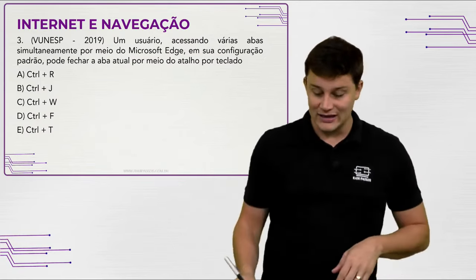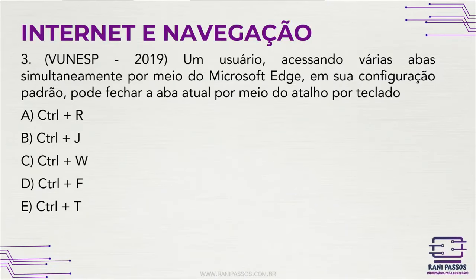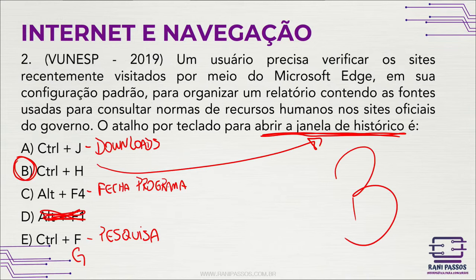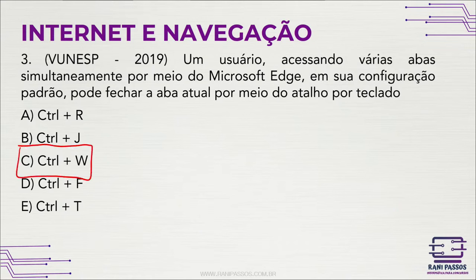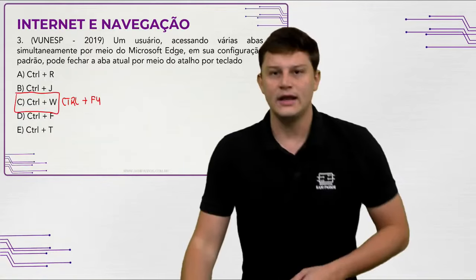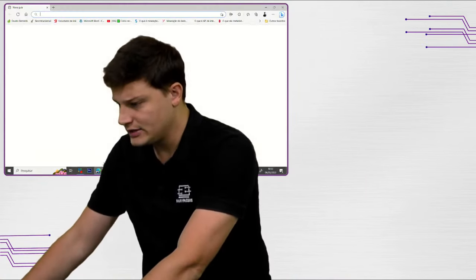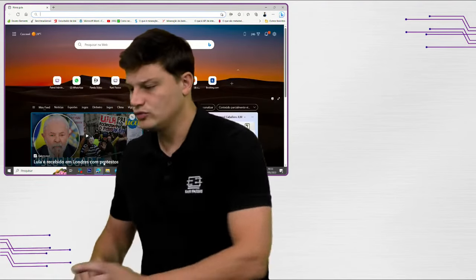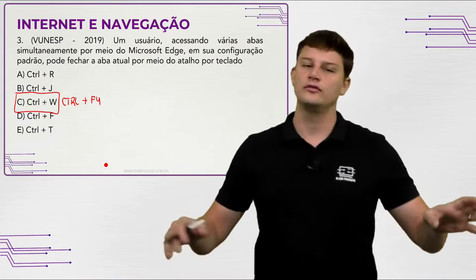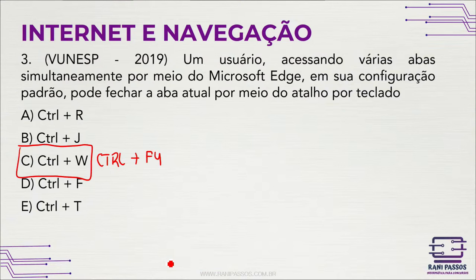Questão 3: fechar aba atual no Edge. Alt+F4 fecha tudo — todas as abas. Para fechar apenas uma aba, usa-se Ctrl+W, ou Ctrl+F4. Funciona no Firefox, Chrome e Edge. Ctrl+R atualiza a página — equivalente ao F5.